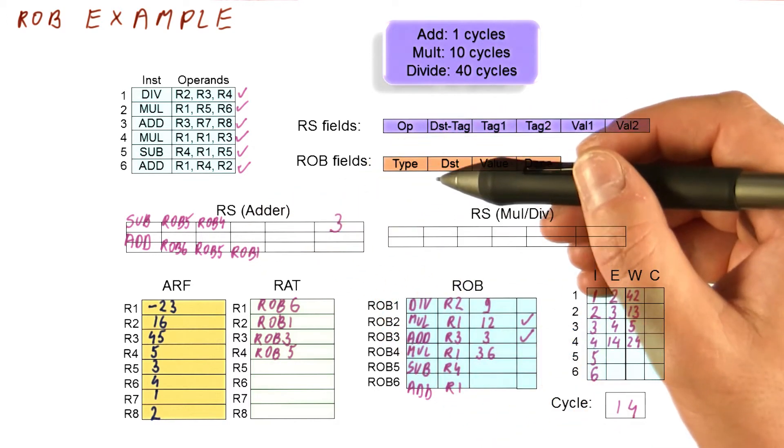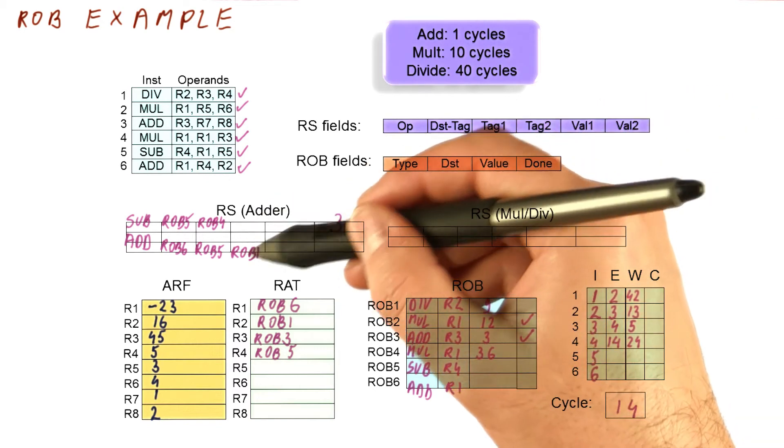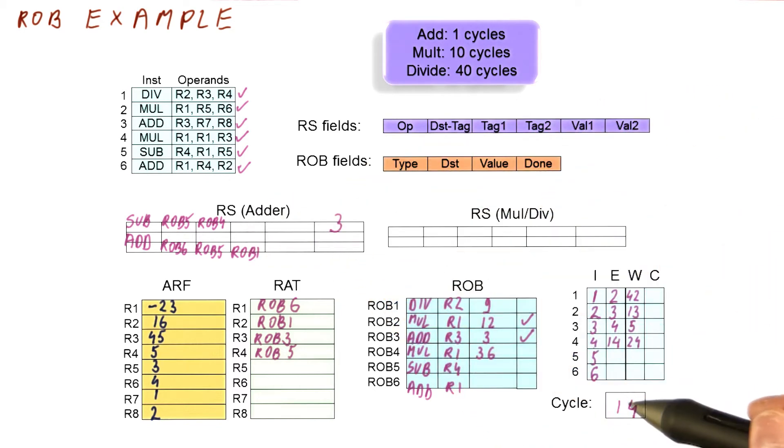These two instructions still are waiting for rob4 and rob5 instructions. And this happens beyond cycle 14. So in cycles 15, 16, et cetera, nothing really happens.